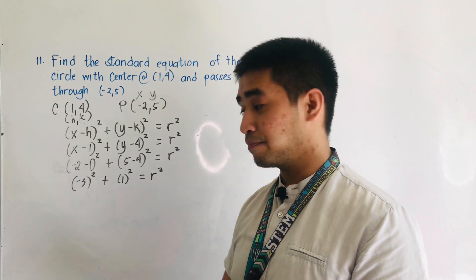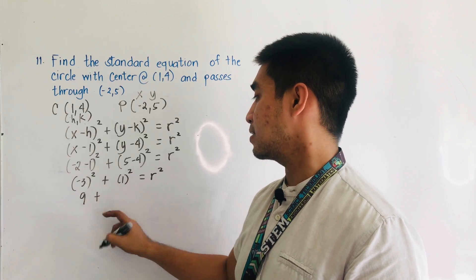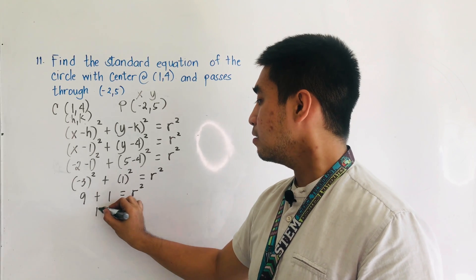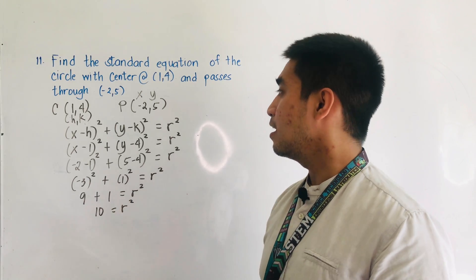What is negative 3 squared? That is 9. Plus, what is 1 squared? That is 1. Therefore, 9 plus 1, which is 10, that is our r squared.